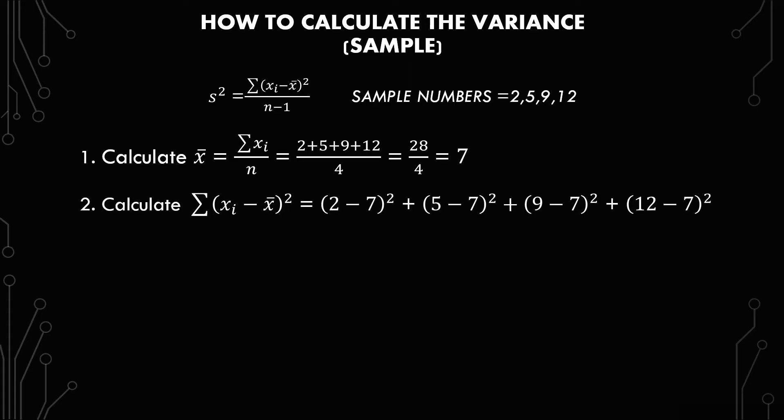The next thing is to calculate each x and subtract it from 7, or the mean. Square it, and then sum them all up.